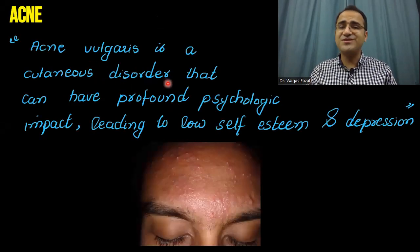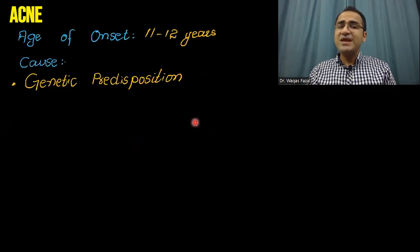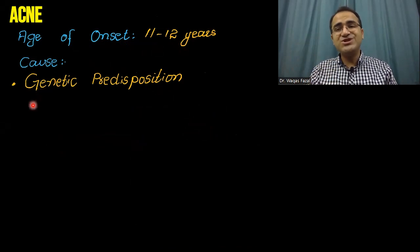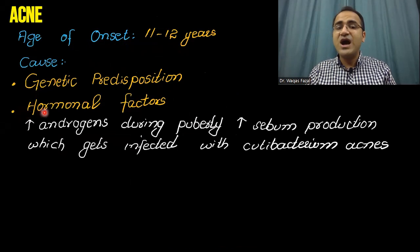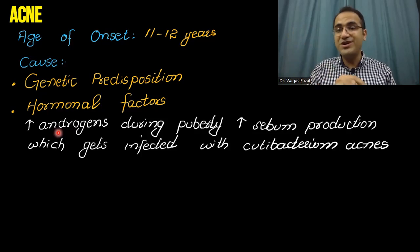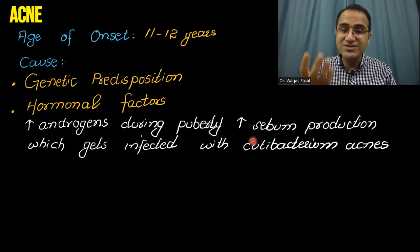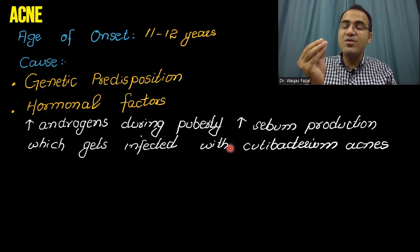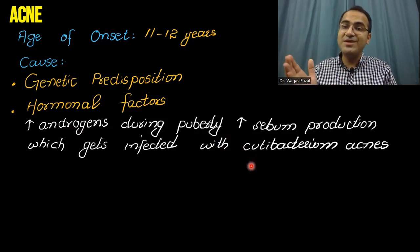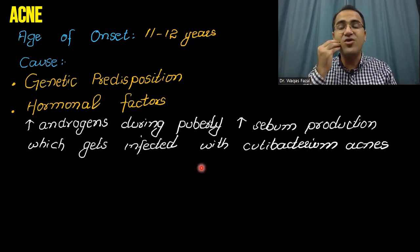Acne vulgaris is a cutaneous disorder that has profound psychological impact, leading to low self-esteem and depression in patients. Acne occurs at the age of 11 to 12 years and genetic predisposition plays a very important role in the development of acne. Hormonal factors, including increased androgen production during puberty, cause increased sebum production from the hair follicles and glands of the skin. That excessive sebum gets infected with Cutibacterium acnes, a bacteria previously named Propionibacterium acnes, resulting in formation of acne.